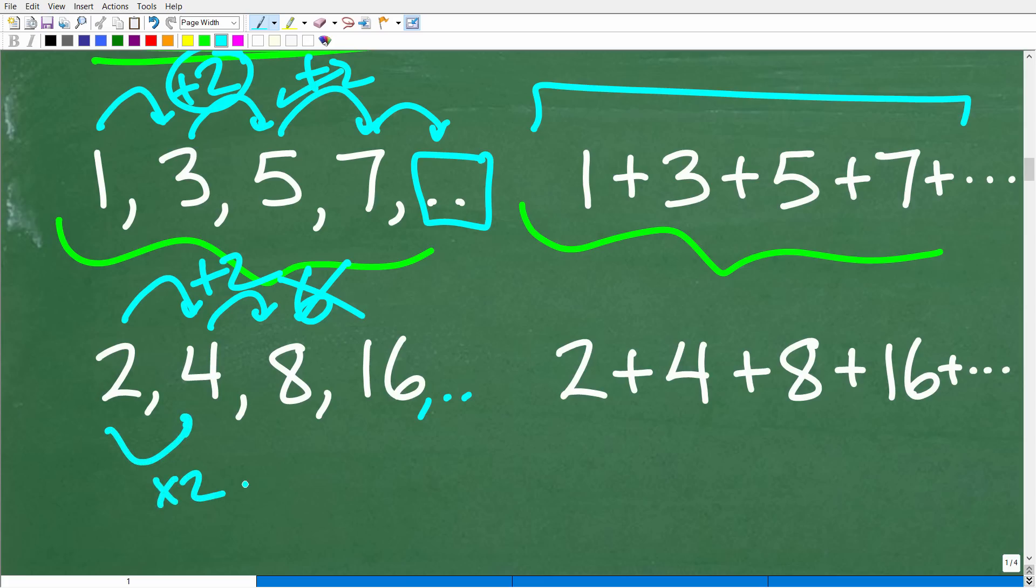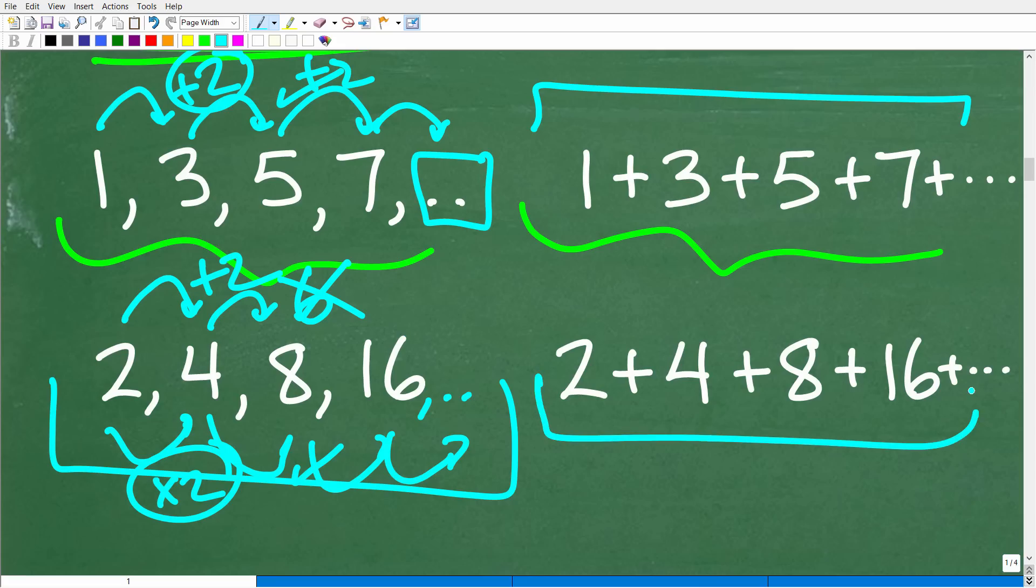Let's check that rule. Two times two is four. Four times two is eight. Well, that's working. Eight times two is sixteen, and on and on and on. This type of sequence is called a geometric sequence, and the terms are basically separated by a common ratio. We're multiplying by the same number to get to the next term in the sequence. If we add up all the terms in a geometric sequence, we have a geometric series.